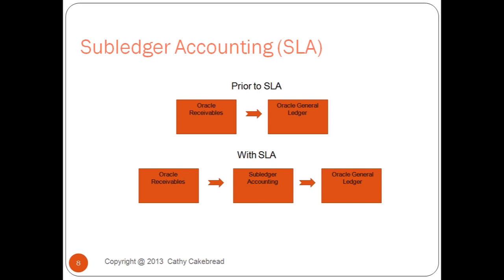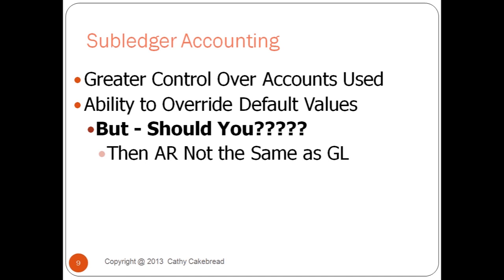With SLA, there's this intermediate step. Your accounting details are stored in Receivables, but they're also stored in subledger accounting. That's an important thing to know because it makes a difference in terms of your processing, and this is clearly an R12-only option.